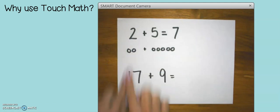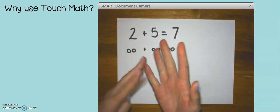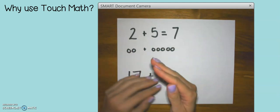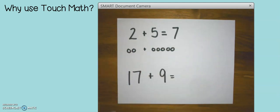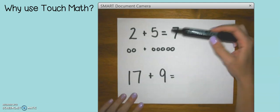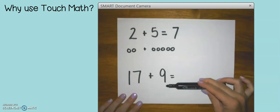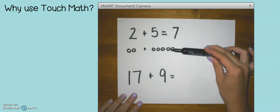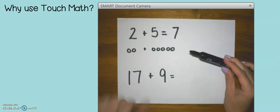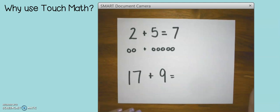But once again, what's going to happen when we get to 17 plus nine? They're not going to be able to put out 17 fingers and nine fingers. It's just not going to happen. So touch math is a strategy that we can use not only for small equations like two plus five, but we can also transition it to larger equations so that we do not need to draw any pictures and we will not need to add on our fingers.